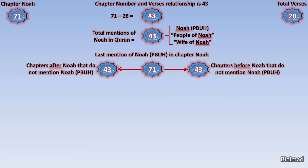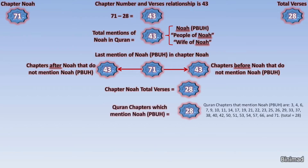Chapter Noah lies directly in the center of 43 chapters before it and 43 chapters after it that do not mention Nuh. This perfect mathematical balance is simply amazing. Now consider this shocking find: the total verses in Chapter Noah is 28, and the total number of chapters in the entire Quran that do mention Nuh is exactly 28 — matching precisely the number of verses in Chapter Nuh. This is absolutely stunning and beyond human capacity, but it simply does not end.